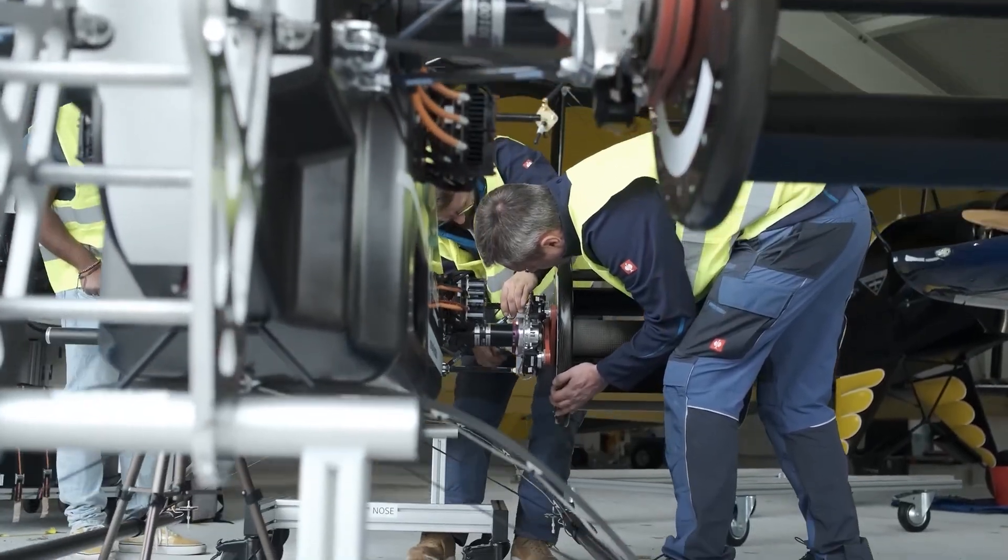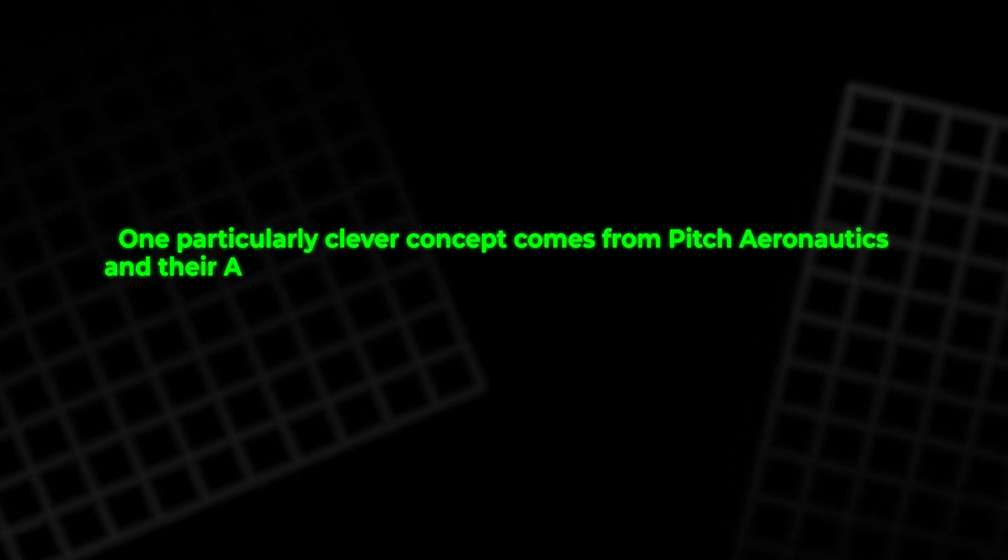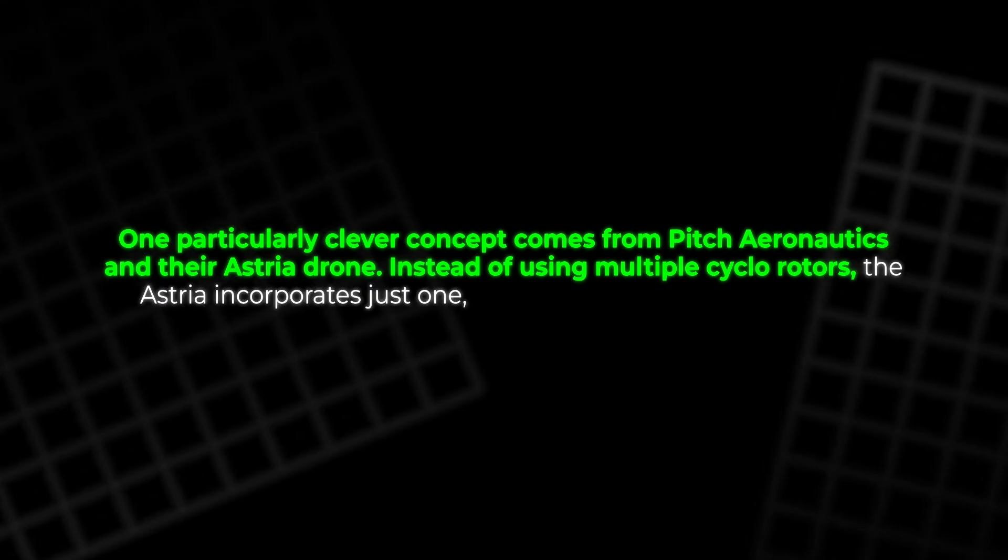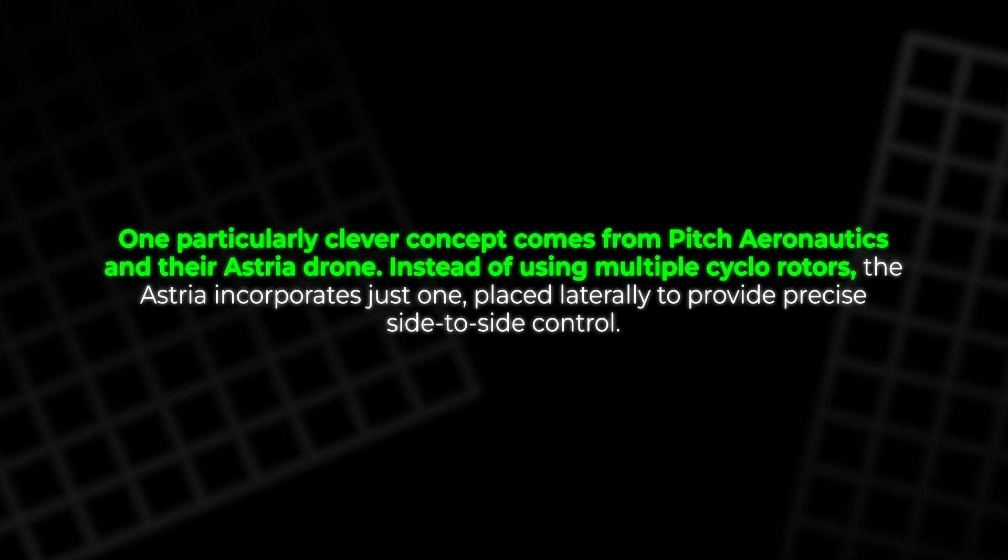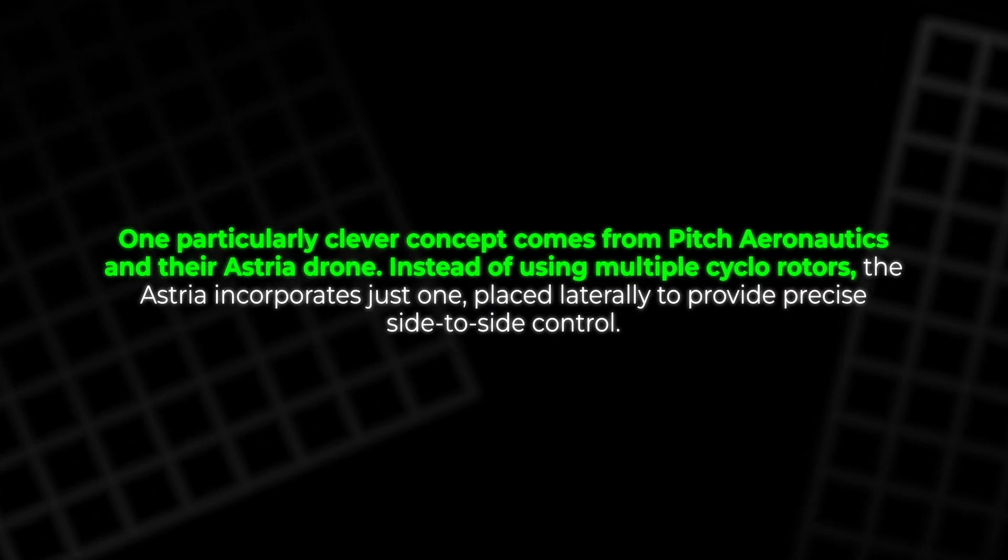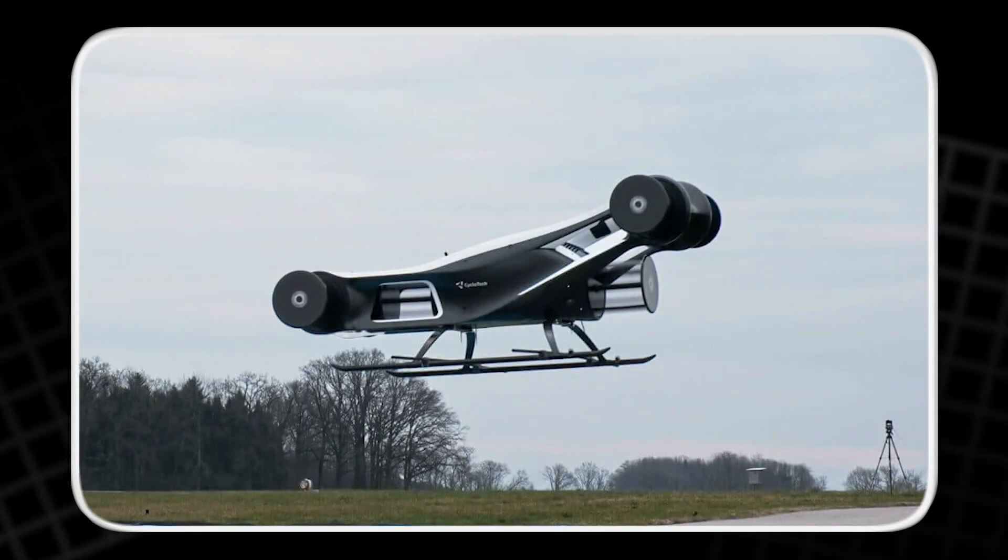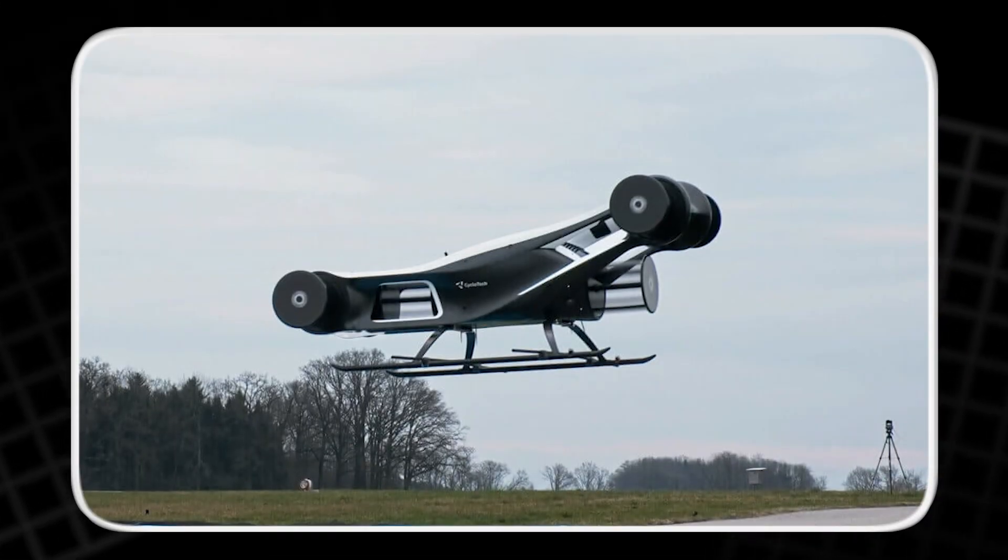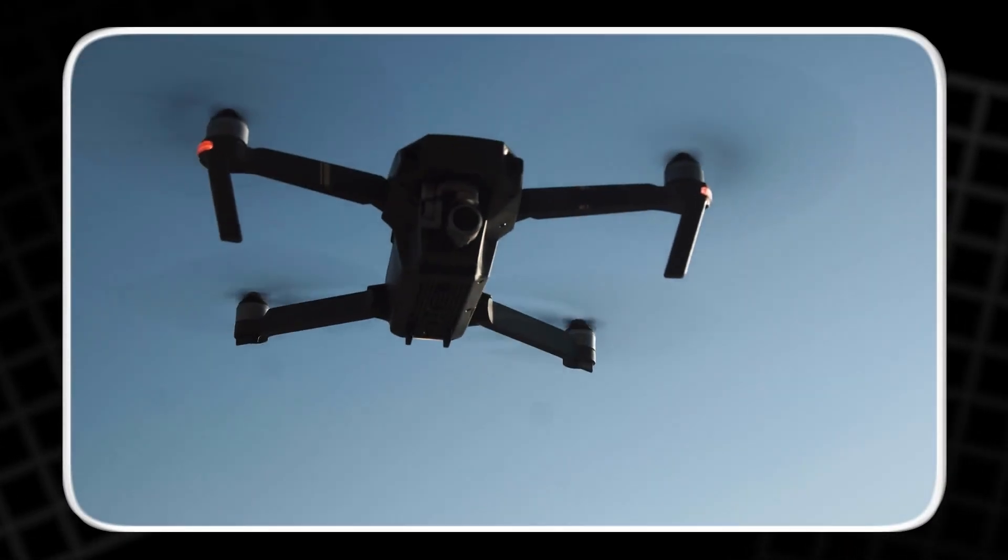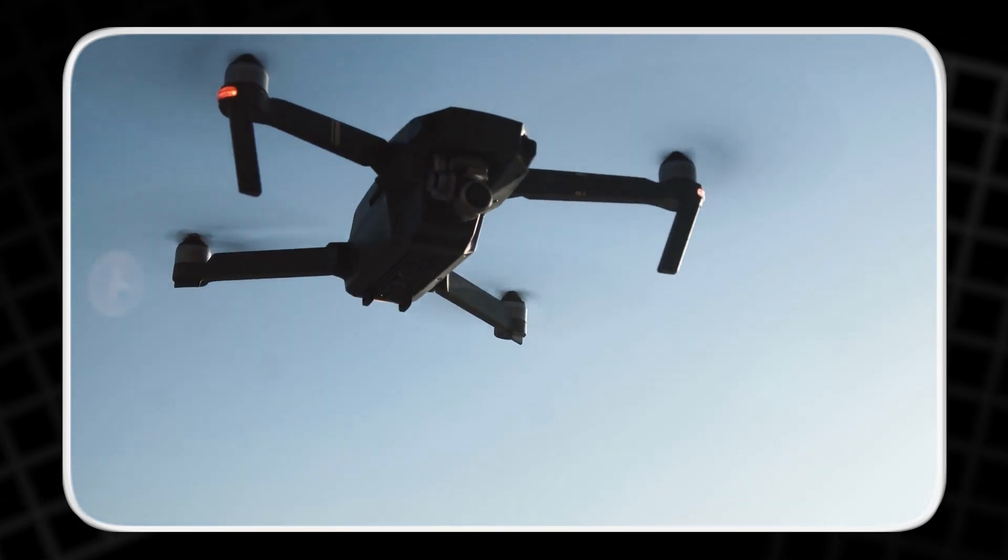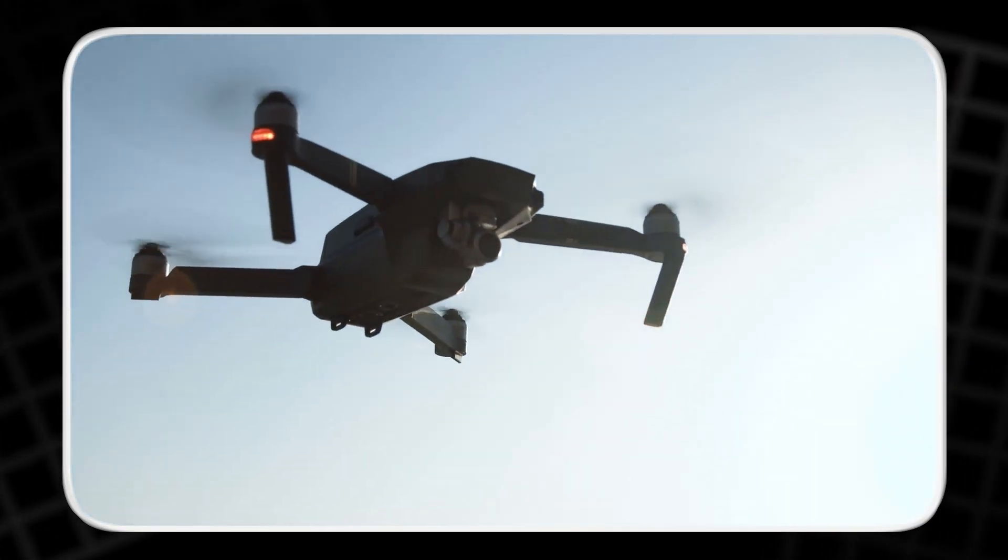That's why hybrid designs are starting to gain attention. One particularly clever concept comes from Pitch Aeronautics and their Astrea drone. Instead of using multiple cyclorotors, the Astrea incorporates just one, placed laterally to provide precise side-to-side control. The rest of the drone uses conventional propellers for lift and thrust. This combination gives it the best of both worlds: the efficiency of a standard drone with the maneuverability of a cyclorotor.